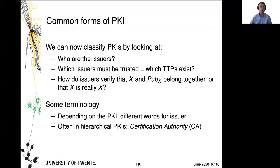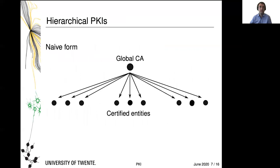Now we are in the nice situation that we can classify PKIs. Using our terminology, we can ask: who are the issuers? Which issuers must be trusted? In other words, which trusted third parties exist in our PKI? And how do issuers verify that X and pub_X belong together, or that X is really X? You will find that depending on the PKI you're looking at, different words are used for issuer. When you have a hierarchical PKI, as is very often the case especially on the web, issuers are called certification authority. Let's have a look at the theory behind these hierarchical PKIs.